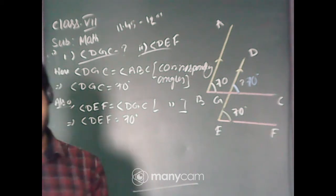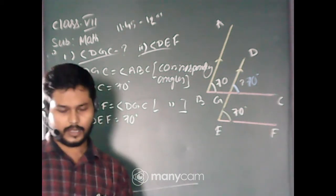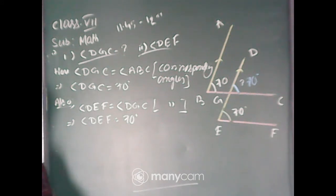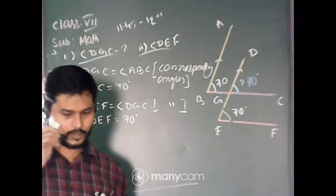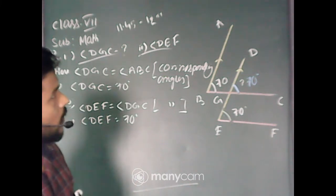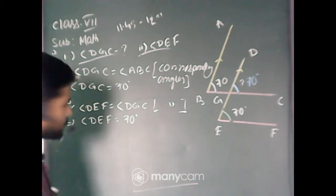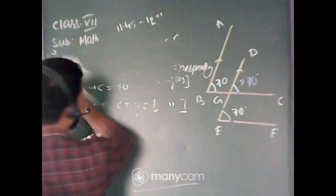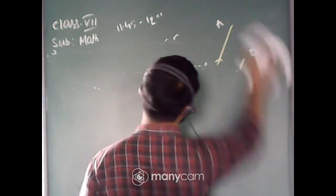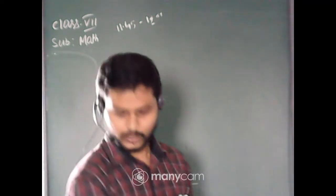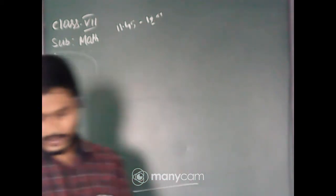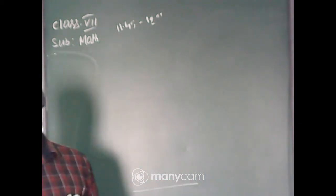Have you understood? Now let's move to the next question — question number 6. There are four questions. I will solve two or three questions, and one or two questions will be left for you. Read the question: in the given figure below, decide whether line L and line M are parallel to each other.